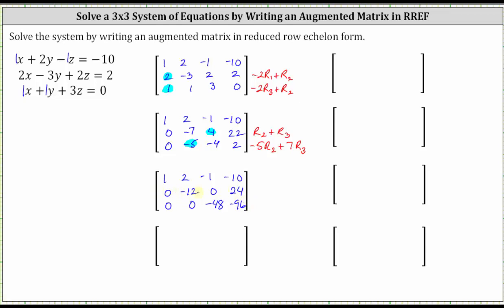Row two and row three look good except the first non-zero element is not one. So let's replace row two with negative one-twelfth times row two — that will give us a one in row two column two. And let's replace row three with negative one-forty-eighth times row three. Let's also work on getting a zero in row one column two. Looking at row one and row two, six times two plus negative twelve is zero, so let's replace row one with six times row one plus row two.